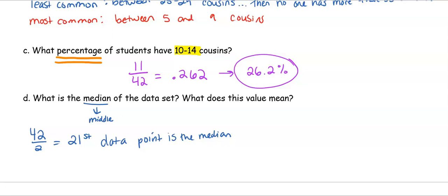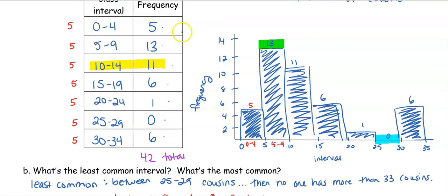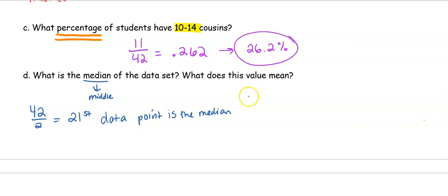But the key is, remember, it has to be in order from lowest to highest, which is what our histogram does and our table as well. So if I'm looking at this, here is my fifth. Remember, I'm looking for my 21st. So 5 to 13. That's 18 people plus another 11. That's going to give us 29. So our 21st data point is going to happen in that third row between 10 to 14. I could have also looked at that on the histogram. 5 plus 13. That puts us at 18. 29. So it's going to happen within in this class interval.